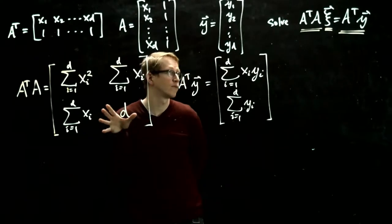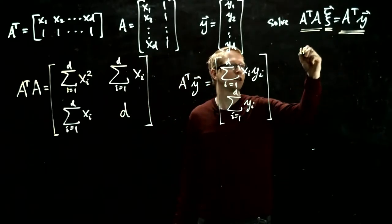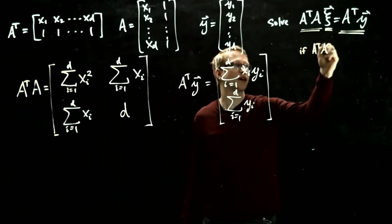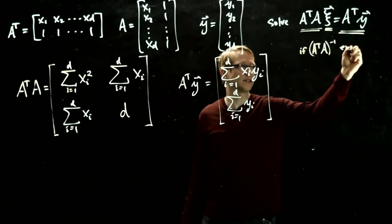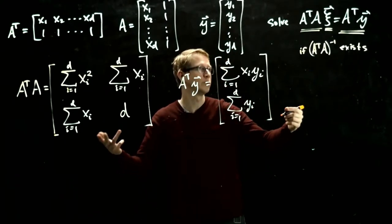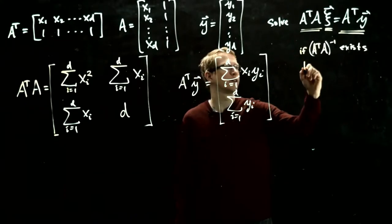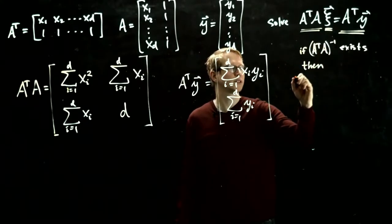It's a little bit tricky. So it's very convenient to first of all find out when this matrix is invertible. And if this matrix is invertible, we can multiply both sides by the inverse. So if A transpose A inverse exists, and we'll figure out what that means, we'll compute the determinant of this to determine when this inverse actually exists, then we can solve this system pretty easily.